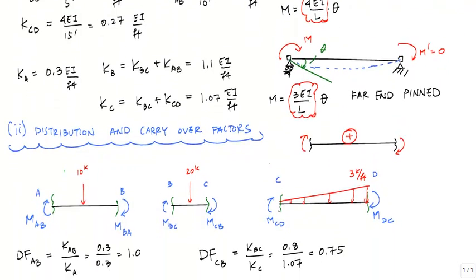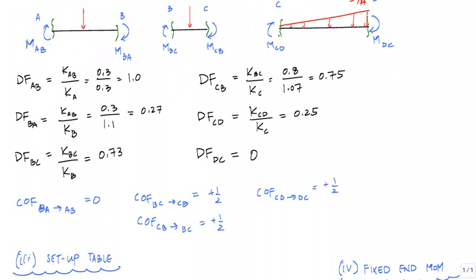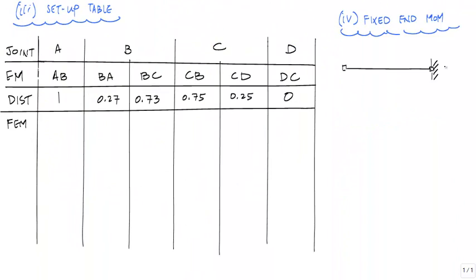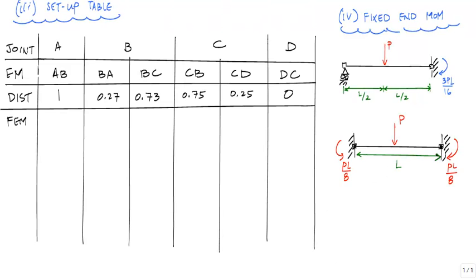So here are the three models I'm going to use. For member AB, I have a beam with one end fixed, the other with a roller support, and a load applied at mid-span. And if I look at usually the inside cover of a textbook or somewhere on the internet, this will tell me that this moment here, this end moment, is 3PL over 16. For member BC, it's going to be a fixed, fixed beam with a concentrated load applied at mid-span. And member CD will be a fixed, fixed beam with a linearly distributed load.